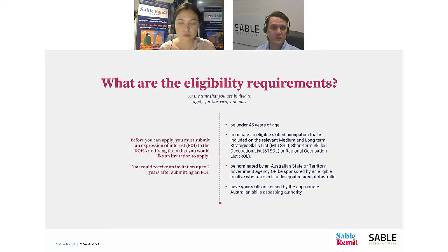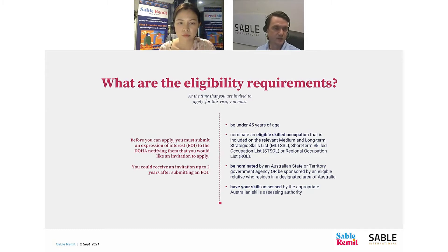Not all states and territories are the same as far as what they're looking for. Some state governments are overloaded with applicants — the demand for some states is very high. New South Wales, Victoria, and Queensland are finding they have a huge number of people applying and wanting to be sponsored. They're the most popular states where people generally want to live and work. However, you should probably broaden your scope of where you're looking to live and work.